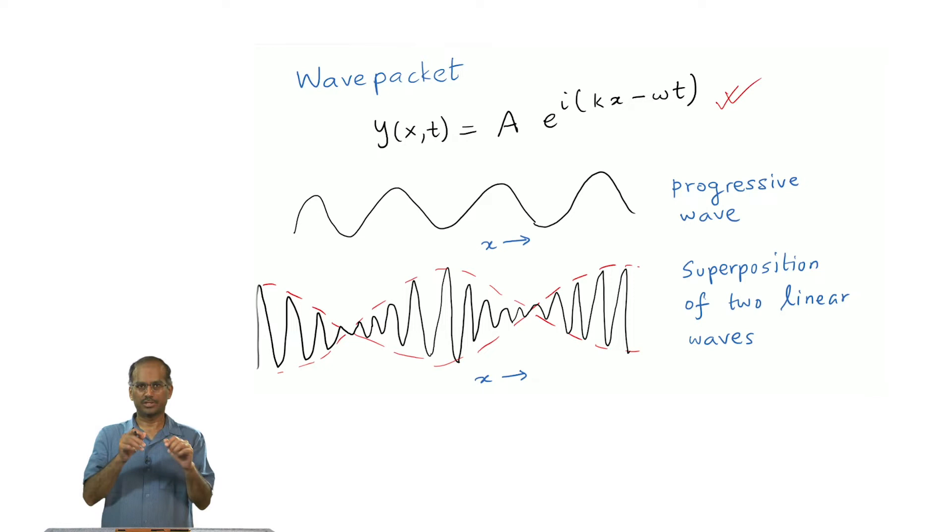At some point we started with beaded string, went to the continuum limit, wrote down an equation of motion and we called it the wave equation. One possible way of representing the solutions was this: y which is a function of position x along the string and t, the time, is given by some amplitude A times e^(i(kx - ωt)). If you try to sketch this function it is a waveform that extends all the way from minus infinity to plus infinity - a sinusoidal progressive wave. This is a solution of a linear partial differential equation.